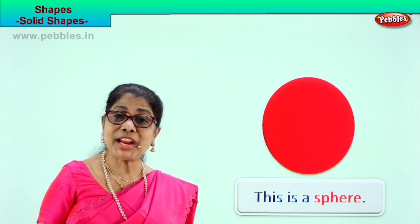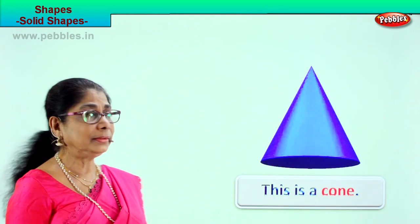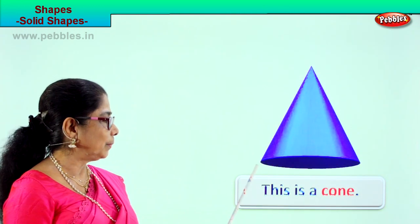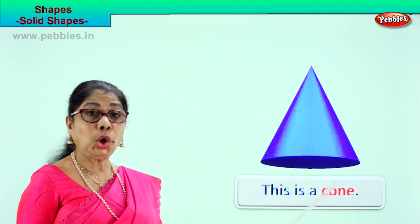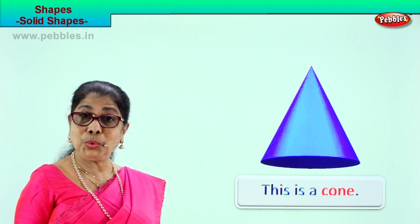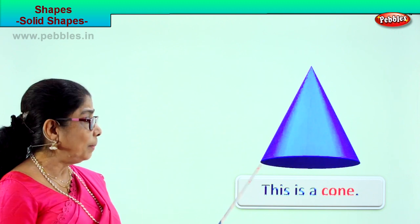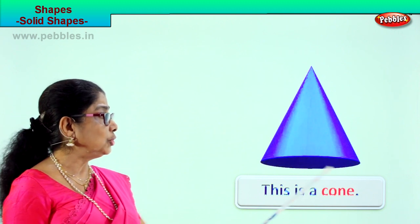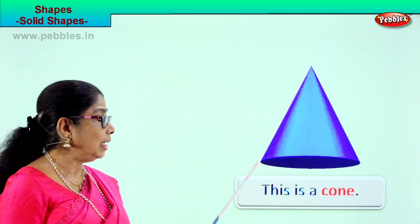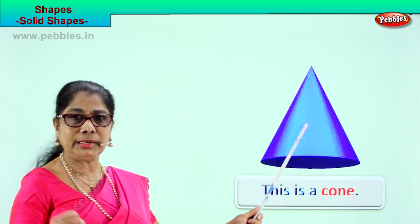Let's look at another solid shape — see what we have here. This is a cone. Have you seen cones in your school? Your maths teacher will show you. Look at that — it's almost like a triangle, but it is solid.